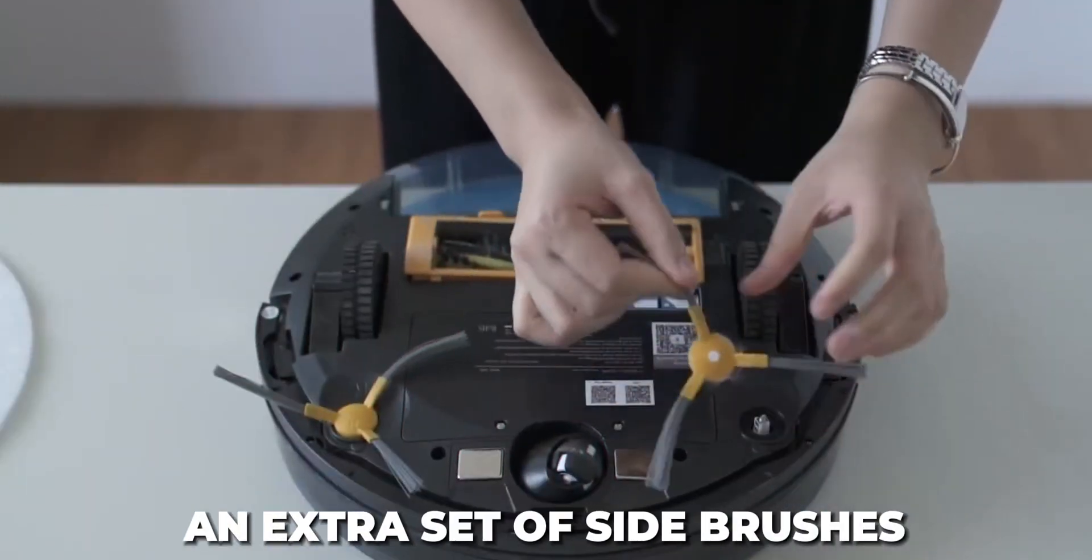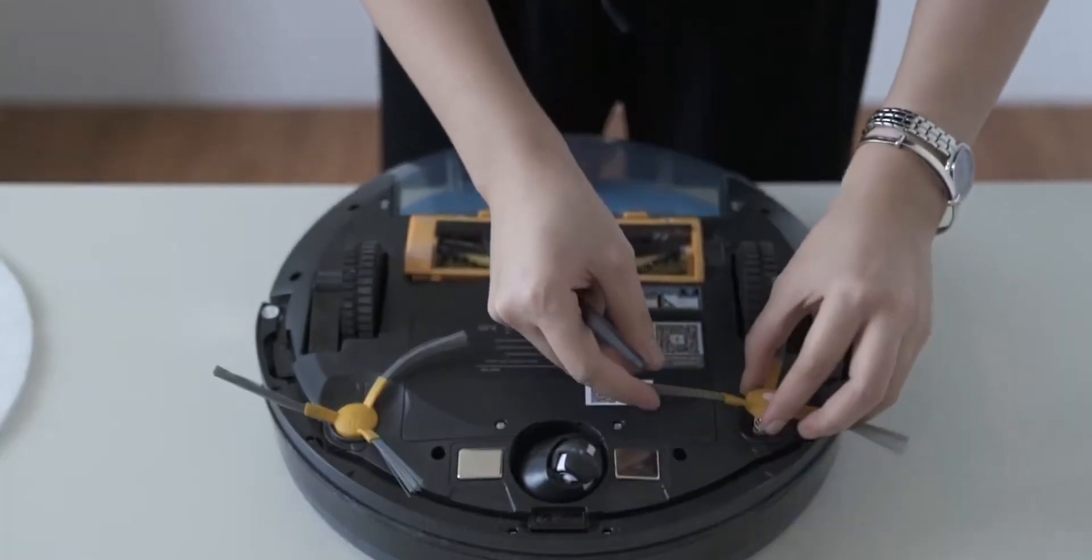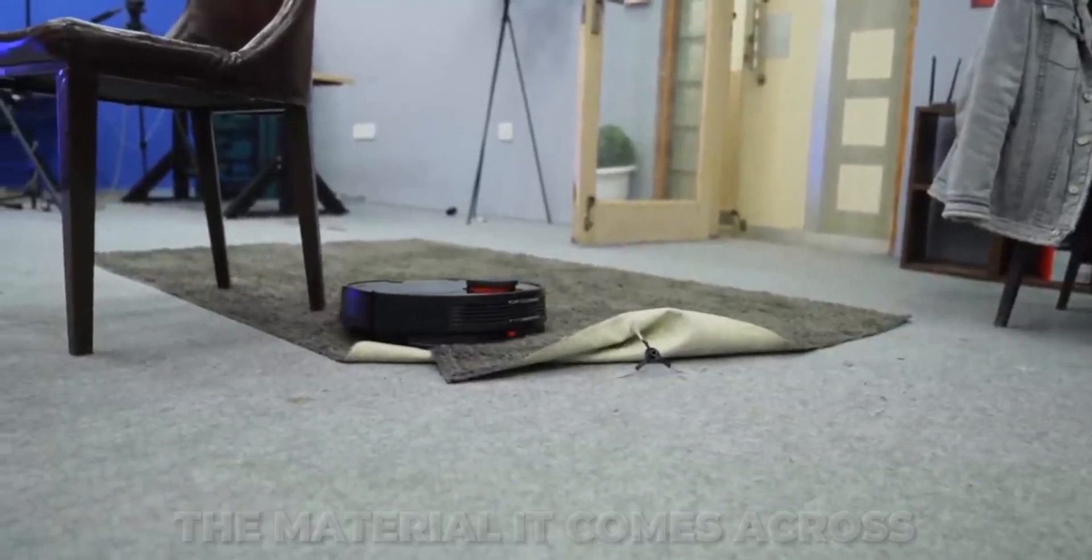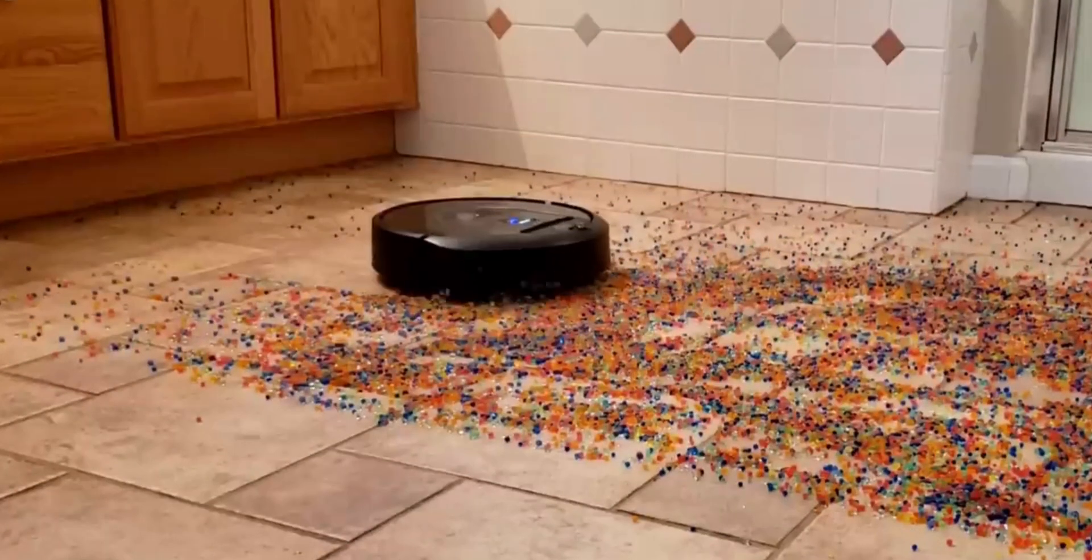An extra set of side brushes and a roller brush are needed to clean this vacuum pump well because its opening length is shorter than its diameter. The material it comes across is easily guided to the suction opening by these. This cleans a larger area.